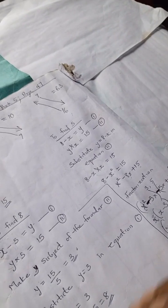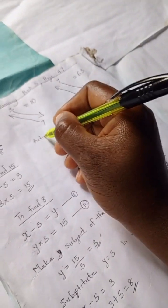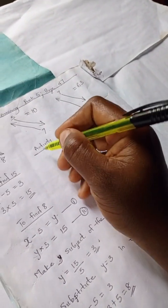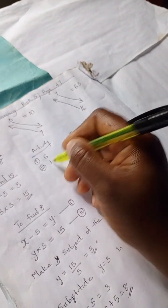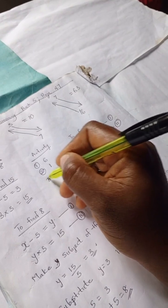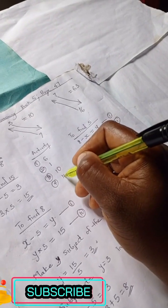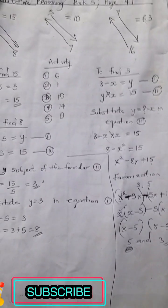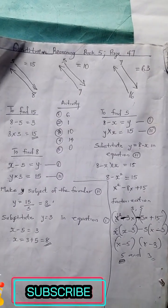Now for the answers to the activity: number one is 6, number two is 1, number three is 10, number four is 14, and number five is 0. Do well to subscribe to this channel for more quantitative reasoning solutions and problems. Bye!